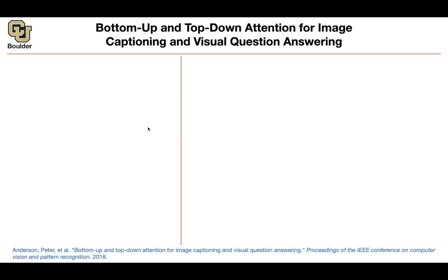We're going to do image captioning and visual question answering. We learned about it with 'Show and Tell' and 'Show, Attend and Tell.' Here's another attention mechanism — both top-down and bottom-up. We take an image, previously 256 by 256 by 3, push it through a convolutional neural network, and end up with another representation that is 14 by 14 by 512. So we increase the pixel dimension from 3 to 512, and reduce the resolution from 256 to 14.